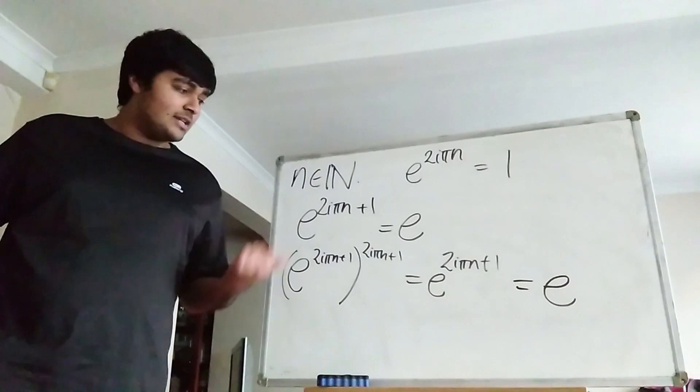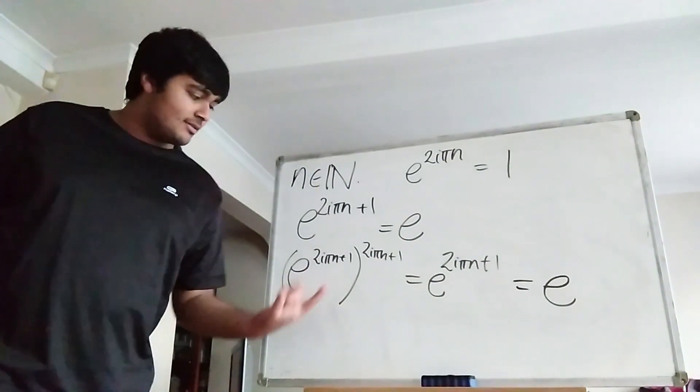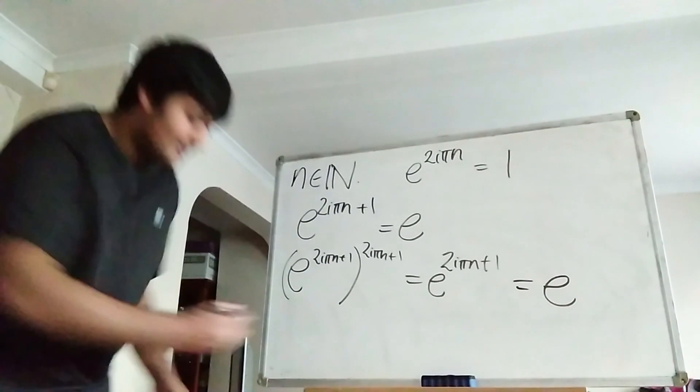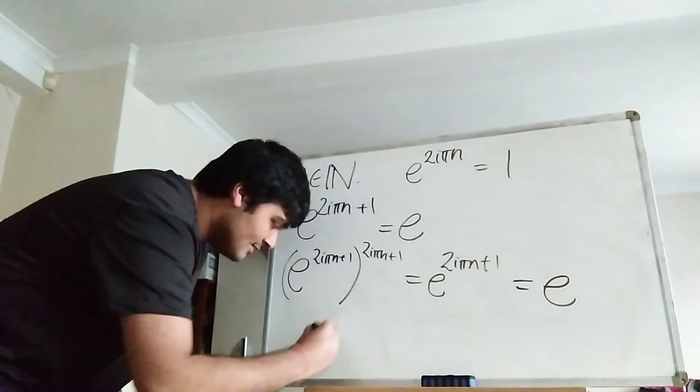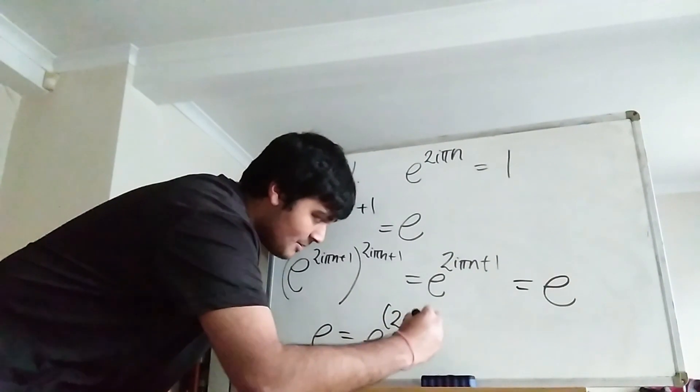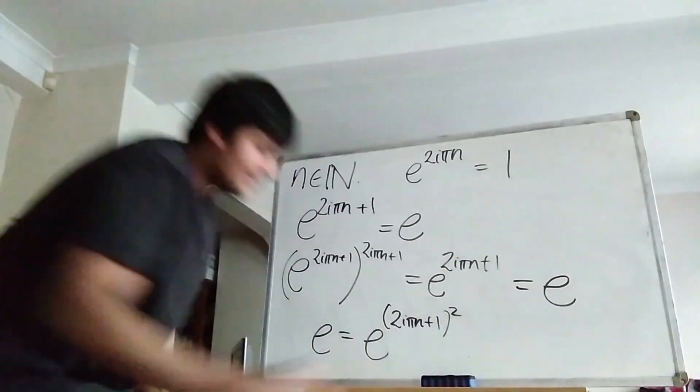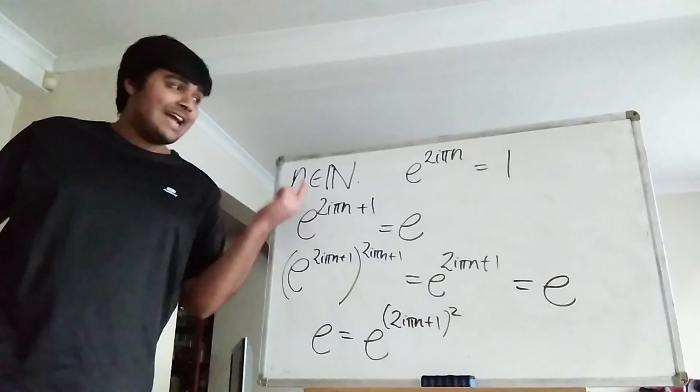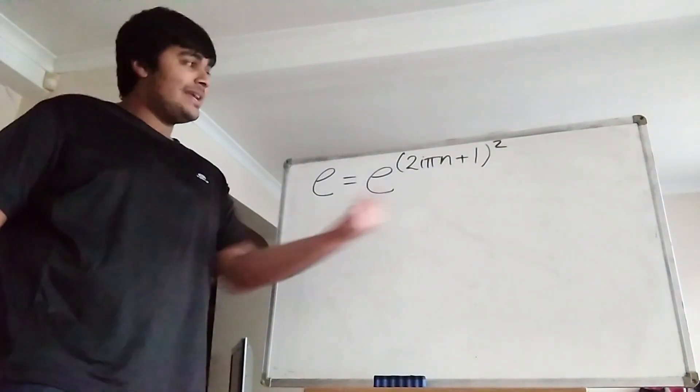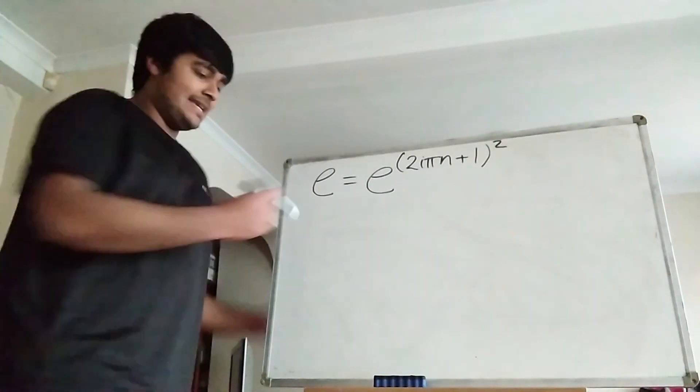And this left hand side we can simplify using exponent rules. So this thing here equals e to the 2i pi n plus 1 all squared. So we get e equals e to the 2i pi n plus 1 all squared. Now let's bring this to the top of the whiteboard and continue.